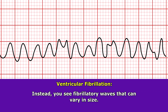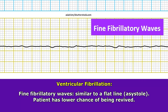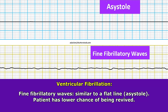What you see on that ECG strip is fibrillatory waves that can vary in size. This means that they can be coarse fibrillatory waves, and whenever you see this, it means that the patient may have a better chance of being revived. Or you can see fine fibrillatory waves, which is similar to a flat line — referred to as asystole — and whenever you see these fine waves, the chances are getting slim for that patient to be revived.